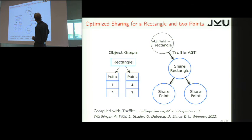And this tree is a bit special, because it's a Truffle tree. It means that every node has an execute method, so it's executable. And each node shares the particular corresponding part of the object graph. So this one is specialized to share a rectangle, this one to share a point, and this one to share the other point.